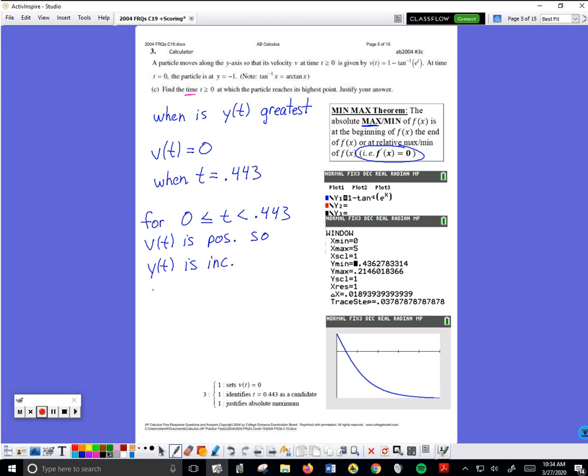Then for a different time period, so for time greater than 0.443 forevermore, I don't know that for certain, it does appear from this graph that the velocity is going to stay negative. I could make my window a little bigger, get comfortable that the velocity is going to stay negative. So for this time period, v(t) is negative, so y(t) is decreasing.